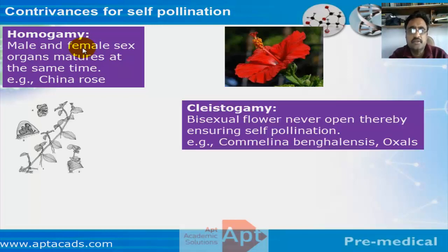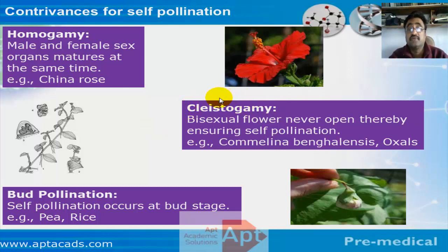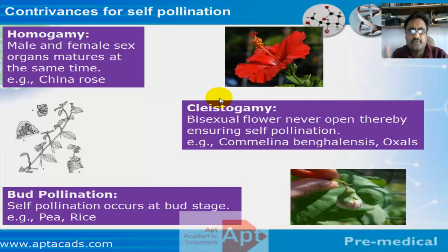There is another variant called cleistogamy. In cleistogamy, the flowers never open — they always remain closed. If the flower is closed, cross-pollination is obviously not possible. Oxalis is an example of cleistogamy. Pea is also a naturally self-pollinated plant; in Mendel's experiment, he removed the anther in a process called emasculation. In pea, pollination naturally occurs as self-pollination.